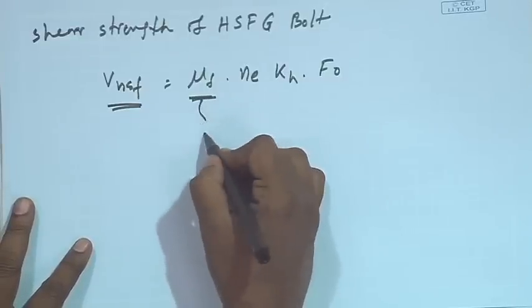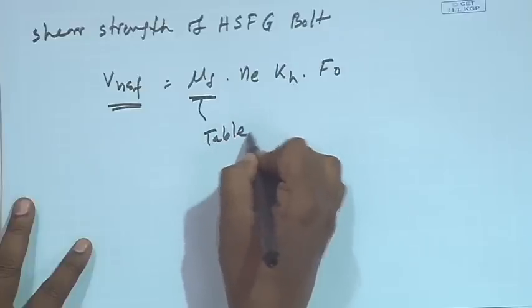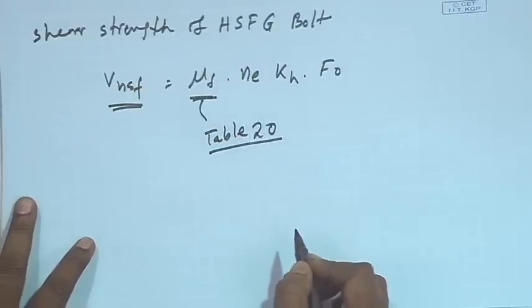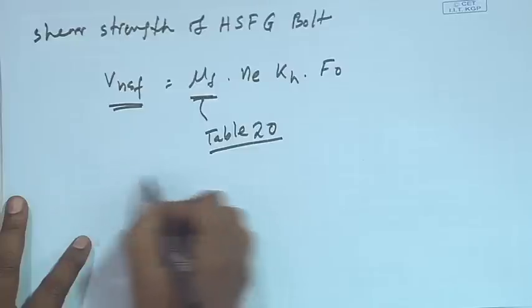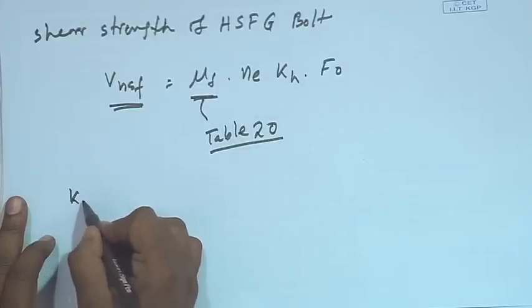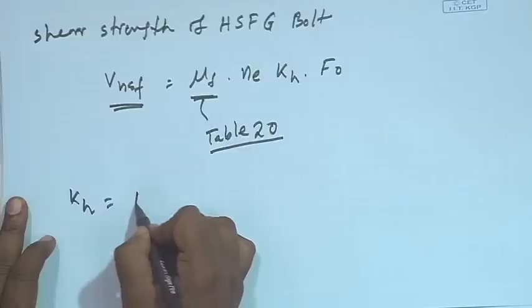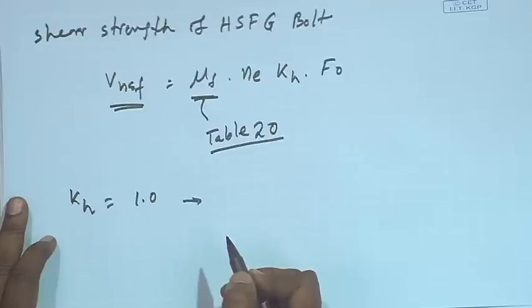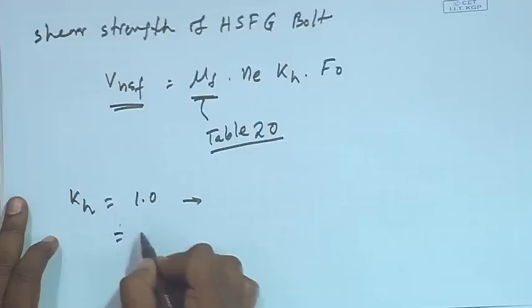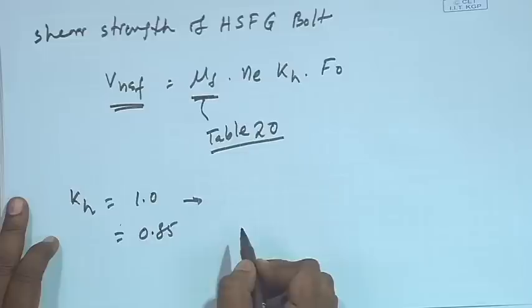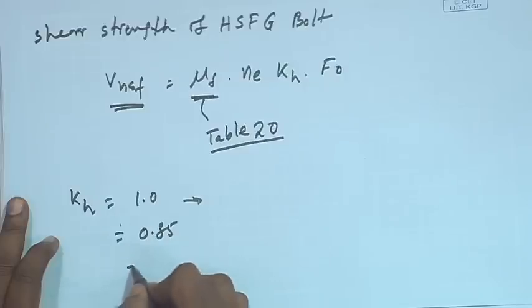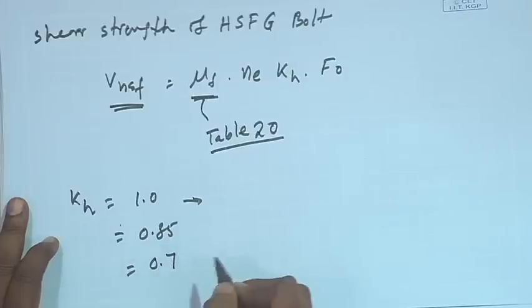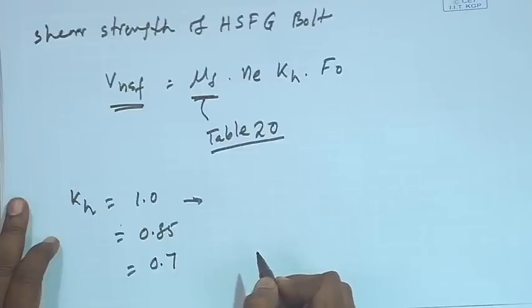The coefficient of friction μf is given in Table 20 of IS 800 and described in clause 10.4.3. The value of kh is taken as 1.0 for fasteners in clearance holes, 0.85 for fasteners in oversized and short slotted holes and long slotted holes loaded perpendicular to the slots, and 0.7 for fasteners in long slotted holes loaded parallel to the slots.